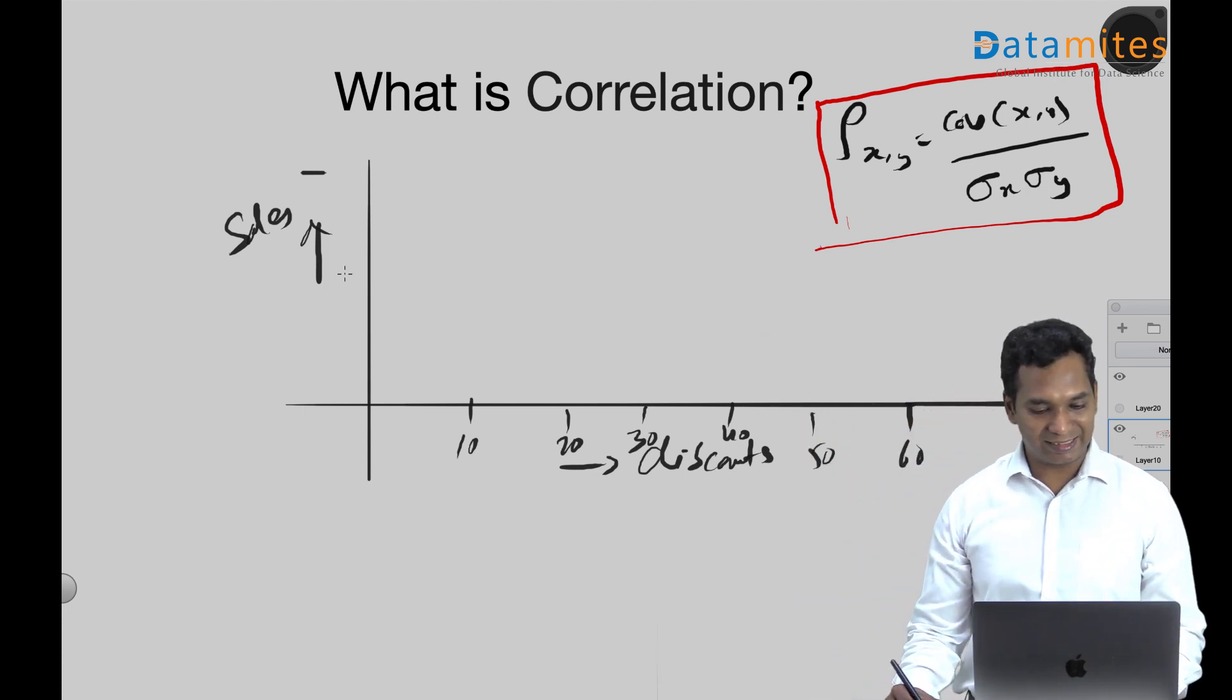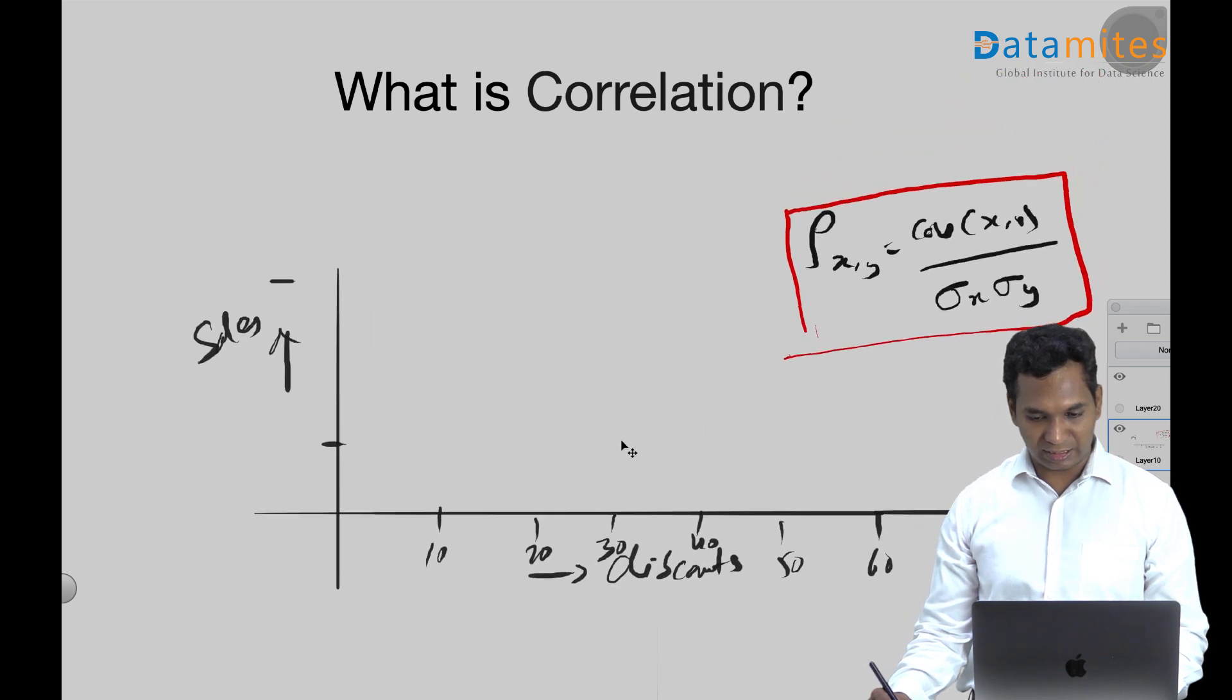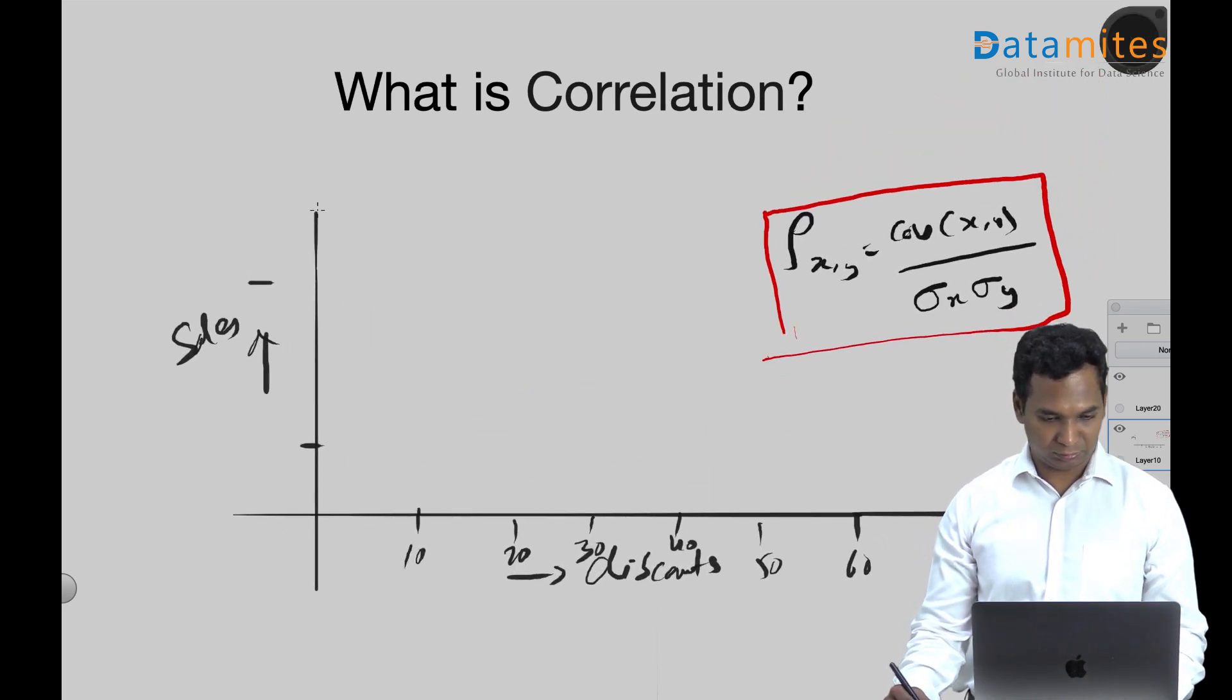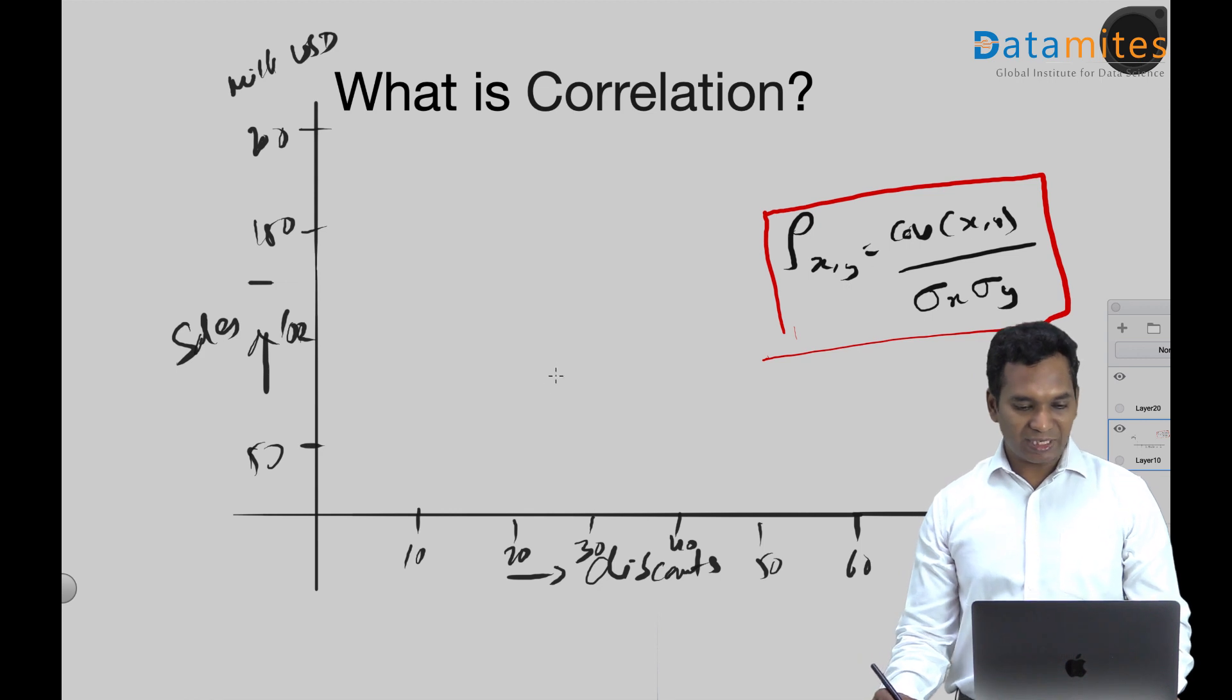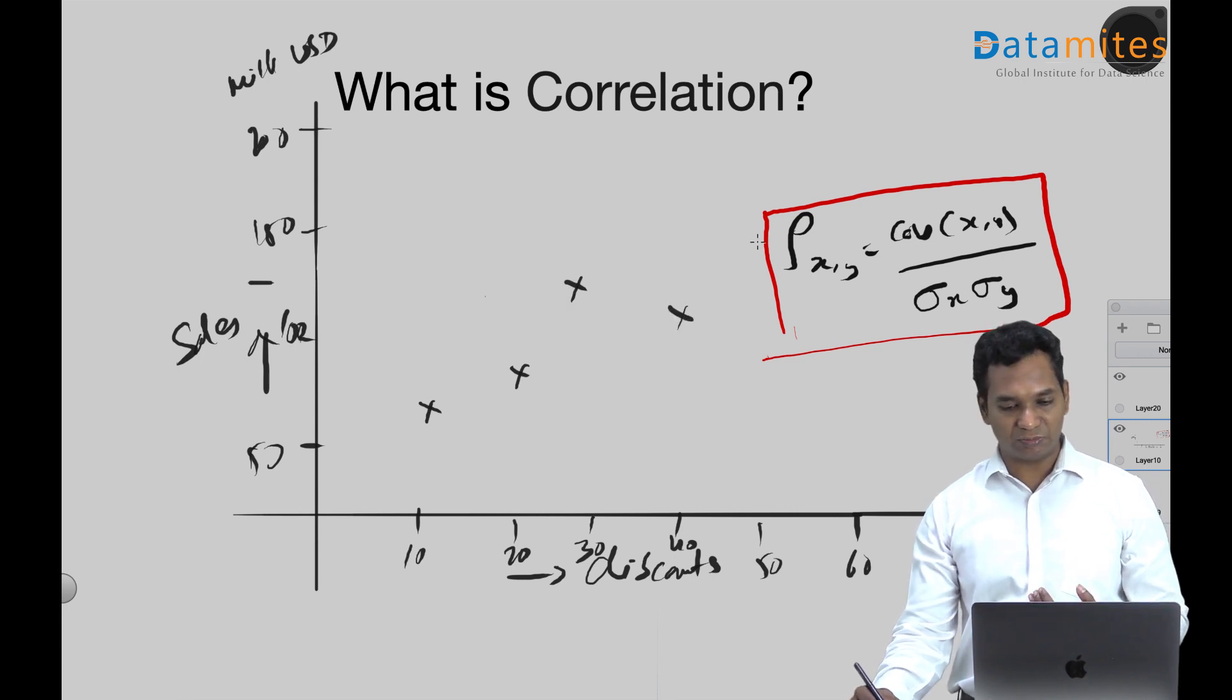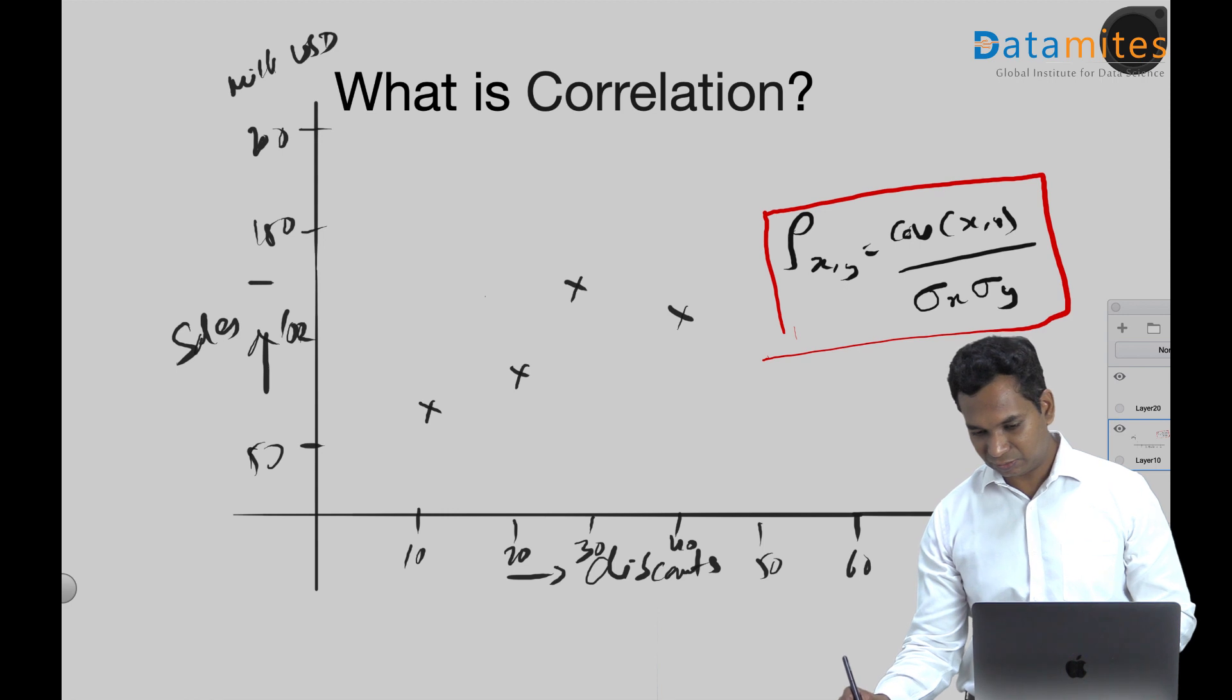Let's say sales we have - let me just move this entire thing a bit down. So sales is, let's say, millions - 50 million, 100 million, 150 million, 200 million dollars. So we have some data. Let's say for 10% we have a sales of here, for 20% we have a sales of here, slightly more. For 30% we have a higher sales, 40% we have somehow maybe sometimes lower sales. But overall, you see that as the discount increases, the sales also increases.